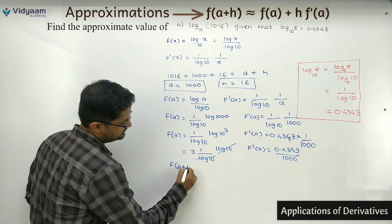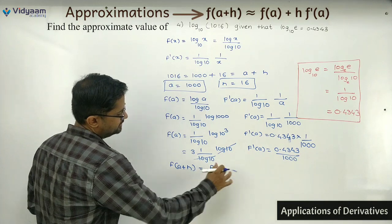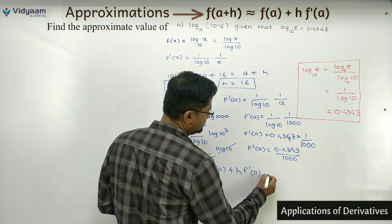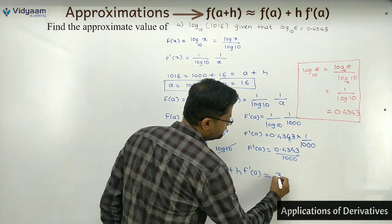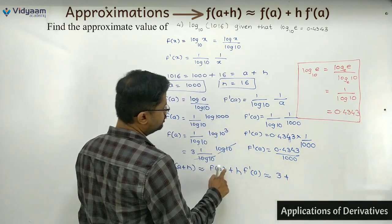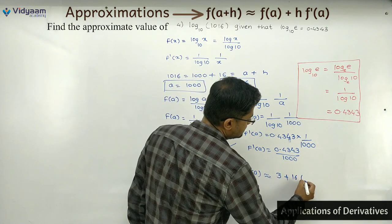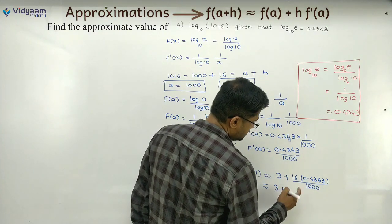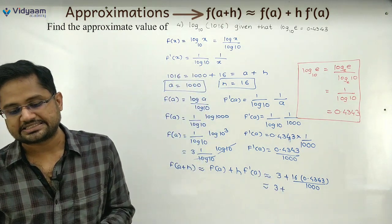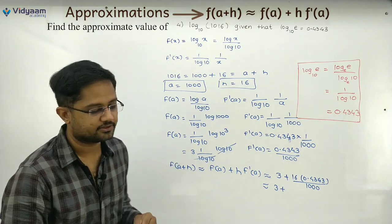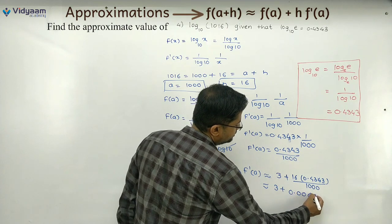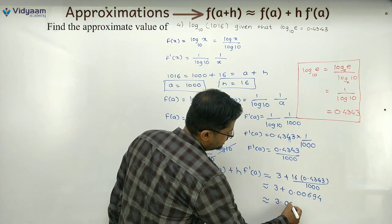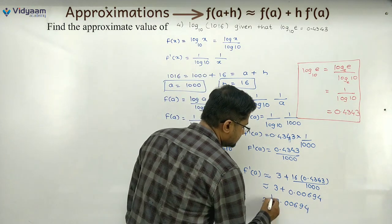Apply master formula: f(a + h) ≈ f(a) + h·f'(a). Substituting: f(a) = 3, h = 16, f'(a) = 0.4343/1000. So: 3 + 16 × (0.4343/1000) = 3 + 0.00694 = 3.00694. The answer is approximately 3.0069. This sum comes up frequently in boards, so it is considered quite important.